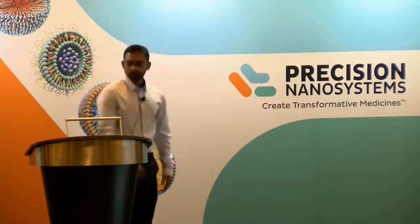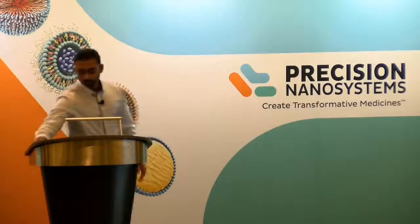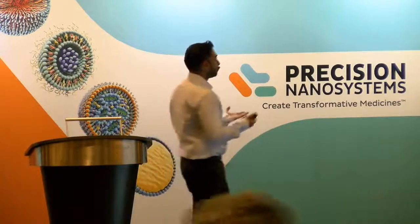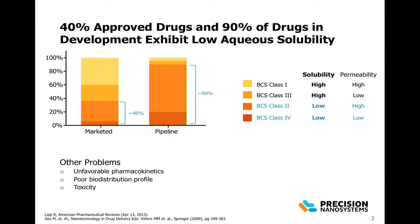Why do we need delivery systems for these low-solubility drugs? One of the factors is that 40% of the approved drugs right now in the market, and about 90% of drugs which are currently in the development pipeline, all of them show low aqueous solubility. They fall under two classes: BCS Class 2 or BCS Class 4, and these have various challenges of their own.